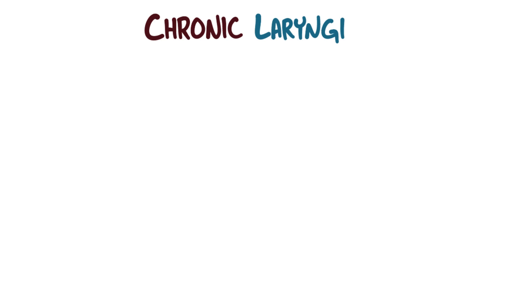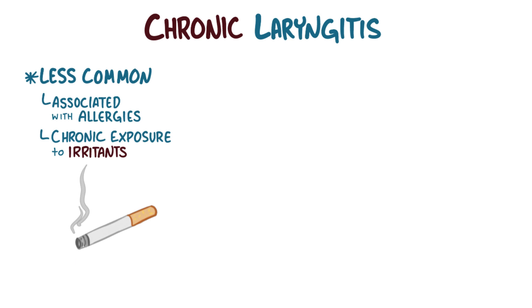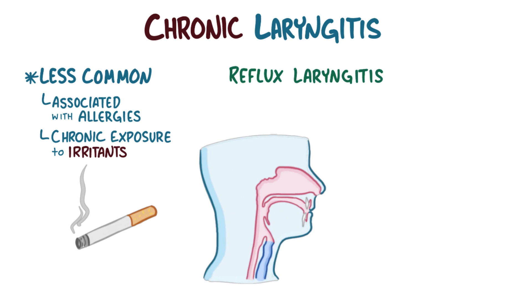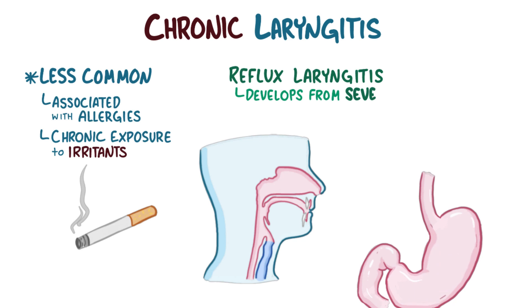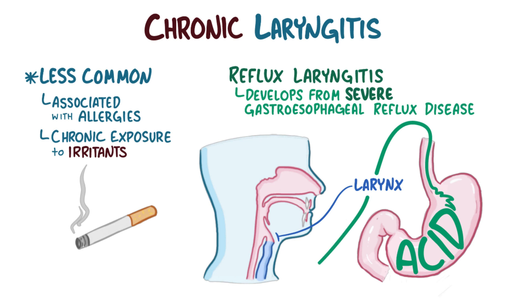Chronic laryngitis is less common and is associated with allergies, or the result of chronic exposure to irritating agents like cigarette smoke. Reflux laryngitis is another cause of chronic laryngitis and develops in people with severe gastroesophageal reflux disease, where acid from the stomach goes all the way up the esophagus into the pharynx, where it can contact and irritate the larynx.